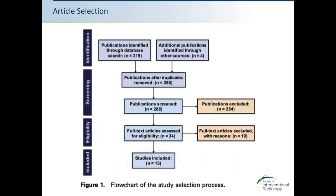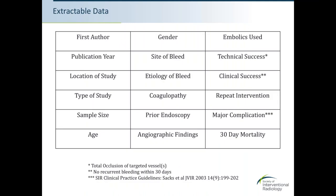The review was performed independently by two experts, with a third reviewer to resolve discrepancies. After an initial search yielded 288 unique articles, screening whittled that down to 34 papers, of which 15 met the complete selection criteria. Extracted demographics included site and etiology of bleeding — upper versus lower GI — coagulation status, devices used (NBCA alone vs. NBCA with hardware), and technical and clinical success definitions.